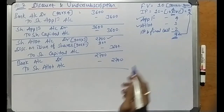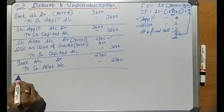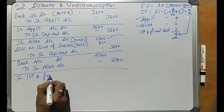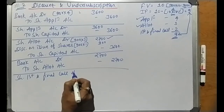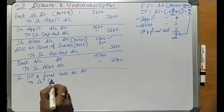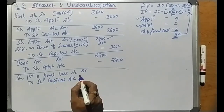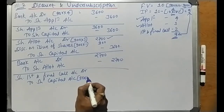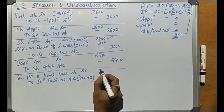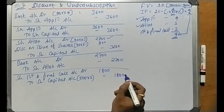The last stage is the first and final call. The journal entry is Share First and Final Call Account debit to Share Capital Account. Shares issued are 900, amount per share is rupees 2. So 900 into 2 equals rupees 1,800. The entry is: Share First and Final Call Account Dr ₹1,800 to Share Capital Account ₹1,800.